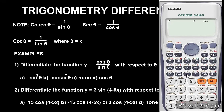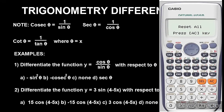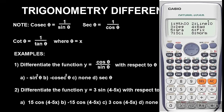Follow the on-screen instructions: press 3, then press OK. Now the calculator is cleared. Next, put the calculator in radian mode — press Shift, then Mode, then 4. This is important to avoid unnecessary errors.